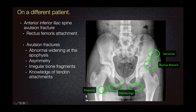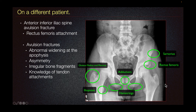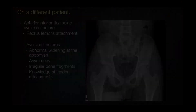The other potential locations include the lesser trochanter, which is the iliopsoas attachment, and the greater trochanter, which is the gluteus medius and minimus attachment. The pubic symphysis, which is the adductor muscles attachment, and the iliac crest, which is the abdominal muscle attachment, are the least common locations for avulsion fracture.